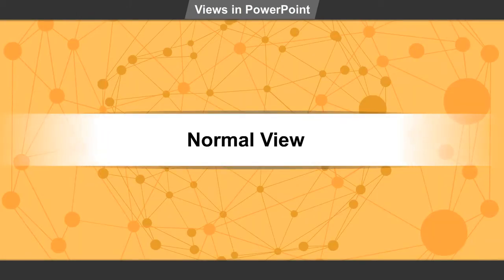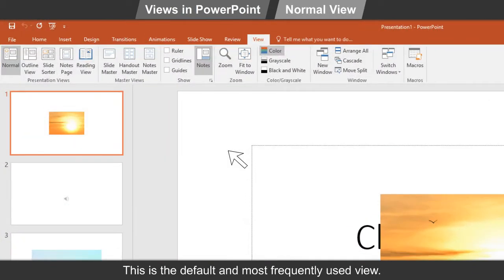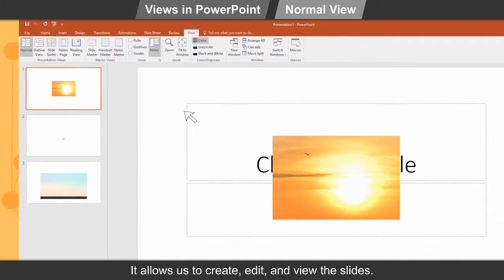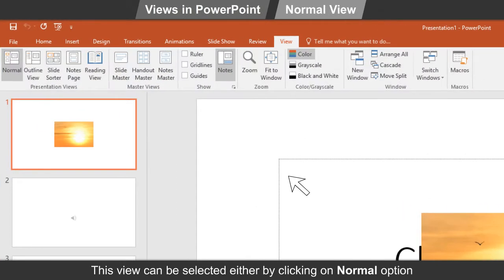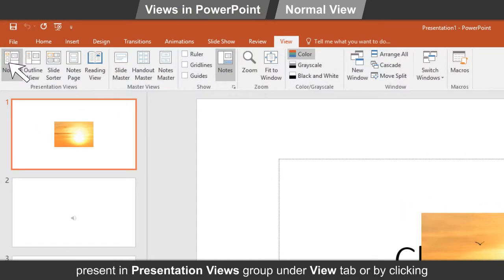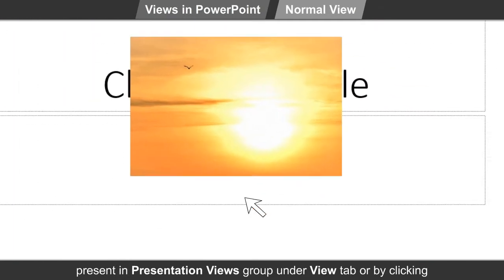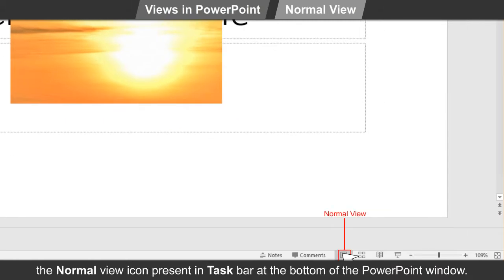Normal view. This is the default and most frequently used view. It allows us to create, edit and view the slides. This view can be selected either by clicking on the Normal option present in the Presentation Views group under the View tab, or by clicking the Normal view icon present in the taskbar at the bottom of the PowerPoint window.